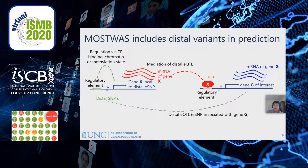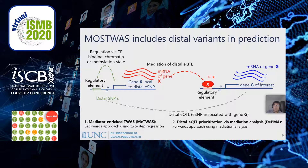There are two methods for prediction in MOSTWAS. First, mediator-enriched TWAS, which detects the strong association between transcription factor X and gene G, and works backwards to the SNPs around gene X. A local predictive model for gene X is incorporated into the final model for gene G using two-step regression. Next, distal eQTL prioritization via mediation analysis interrogates highly significant distal eQTLs to detect large indirect effects on gene G mediated through sets of biomarkers local to the distal SNP. Distal SNPs with large mediation effects are included in the final predictive model fitted using elastic net regression or linear mixed modeling. MOSTWAS selects the best model between these two methods as the final expression model for a given gene.